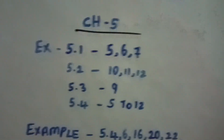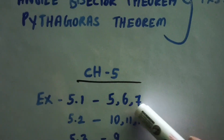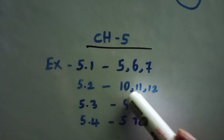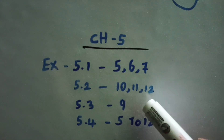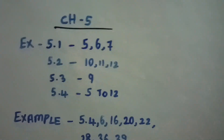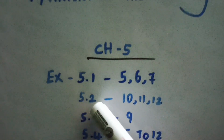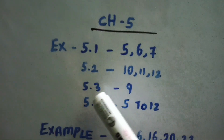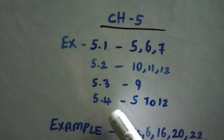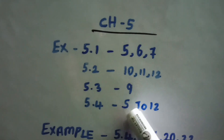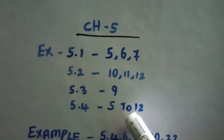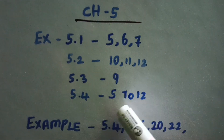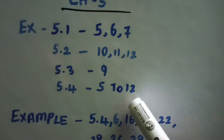Exercise 5.1 questions 5th, 6th, 7th. Exercise 5.2 questions 10, 11, 12. Exercise 5.3 question 9. Exercise 5.4 questions 5, 6, 7, 8, 9, 10, 11, 12. In the sum, okay — 5.2 and 5.5.